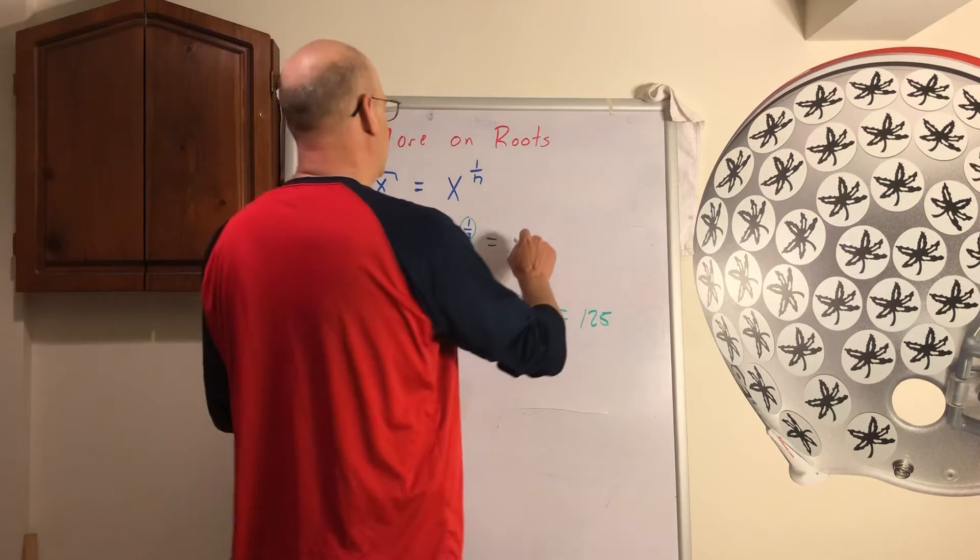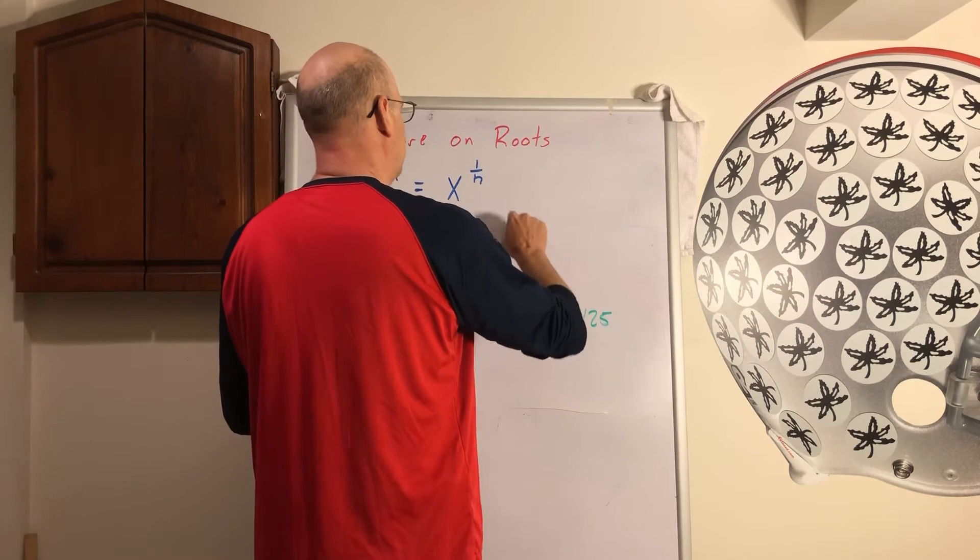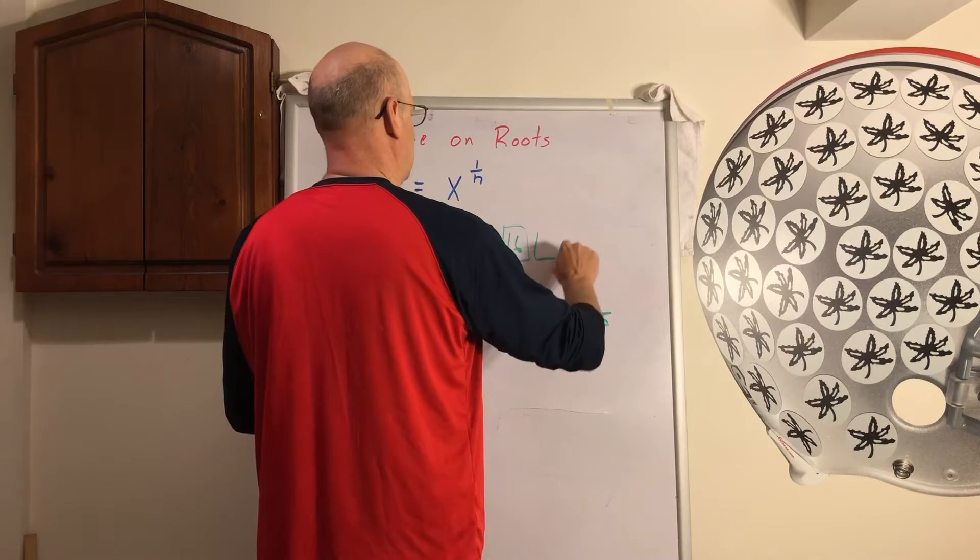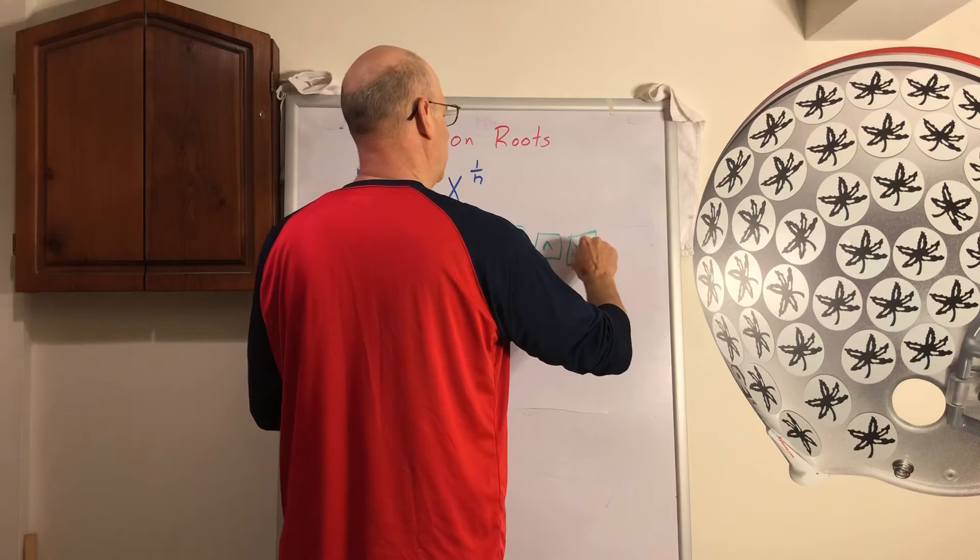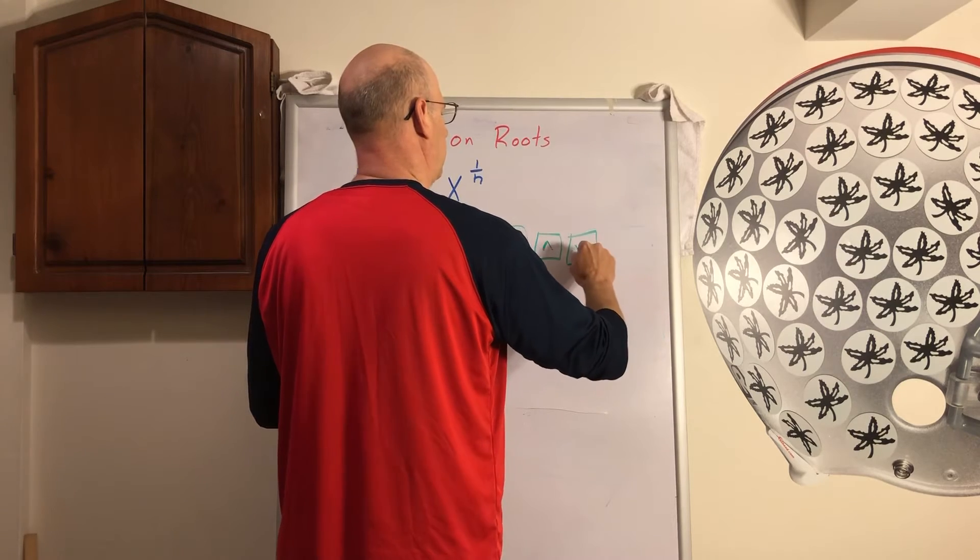So what you would do there is you're gonna have your 16, you're gonna hit that little up caret thing. And then you're gonna put in the 0.333 repeating.